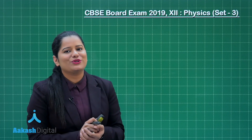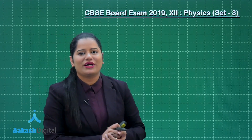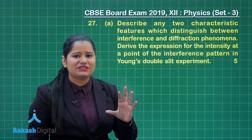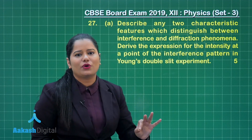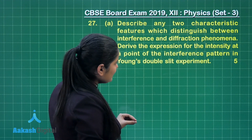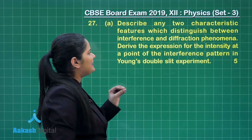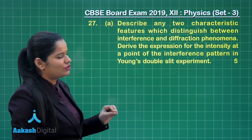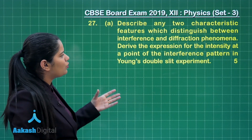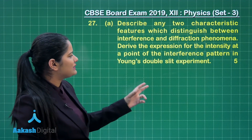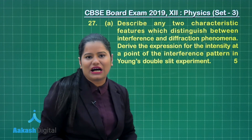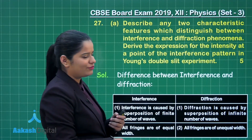Now let's have a look at the discussion for the last question of Set 3, that's question number 27. Here I have taken the first part of the first choice of question number 27 on the board, which says: describe any two characteristics or features which distinguish between the interference and diffraction phenomena. This part of the question holds two and a half marks.